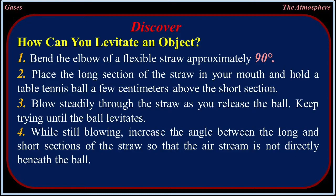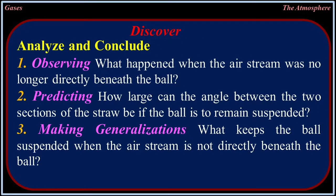How can you levitate an object? Bend the elbow of a flexible straw approximately 90 degrees. Place the long section of the straw in your mouth and hold a tennis ball a few centimeters above the short section. Blow steadily through the straw as you release the ball — keep trying until the ball levitates. While still blowing, increase the angle between the long and short sections of the straw so that the airstream is not directed beneath the ball. Observe: what happened when the airstream was no longer directly beneath the ball? How large can the angle be for the ball to remain suspended?